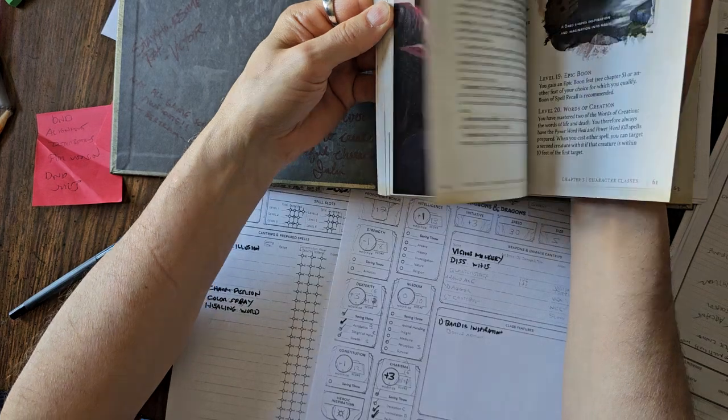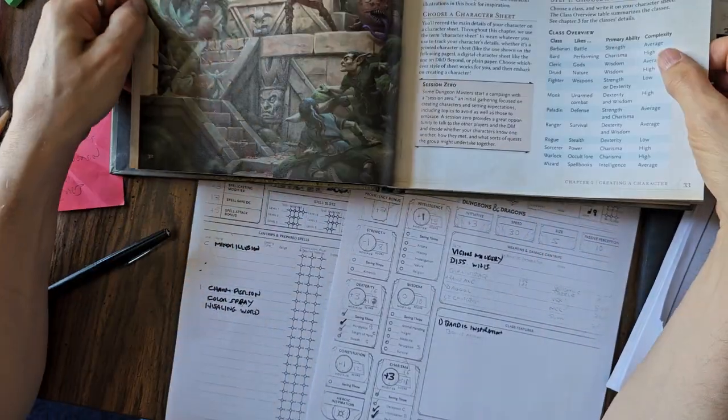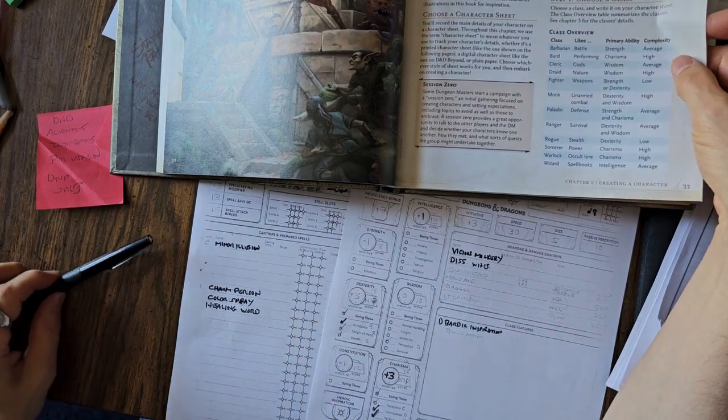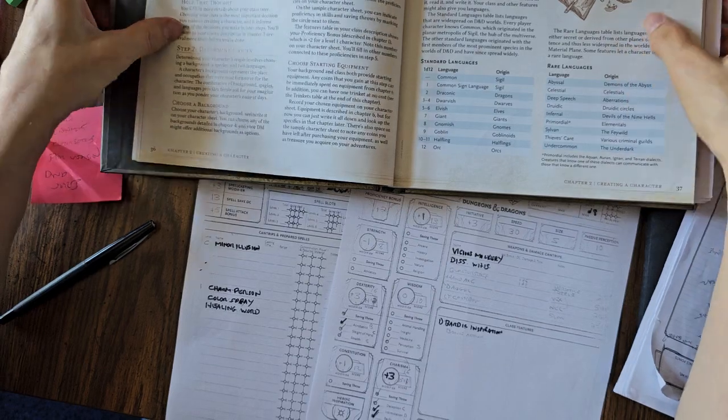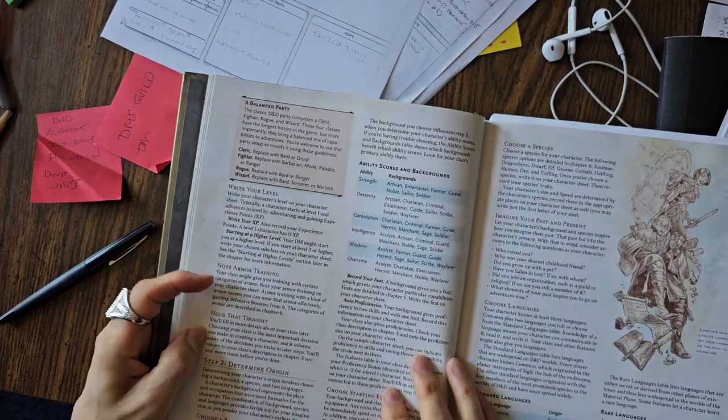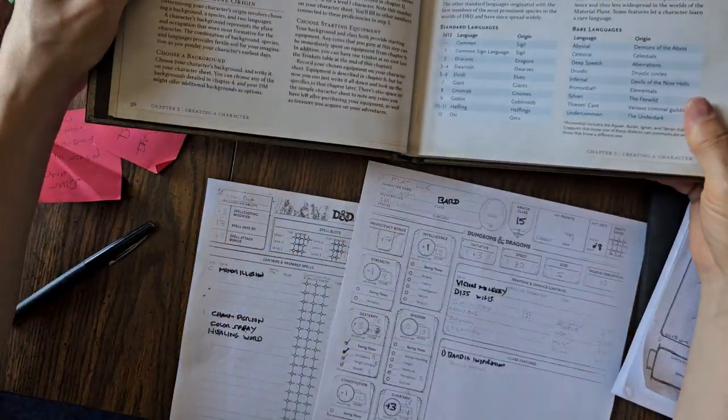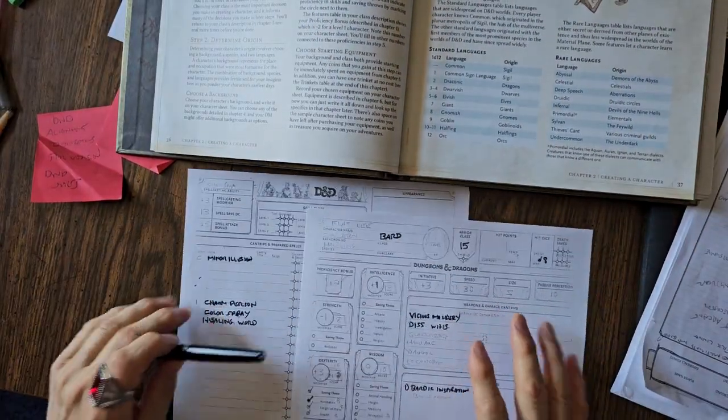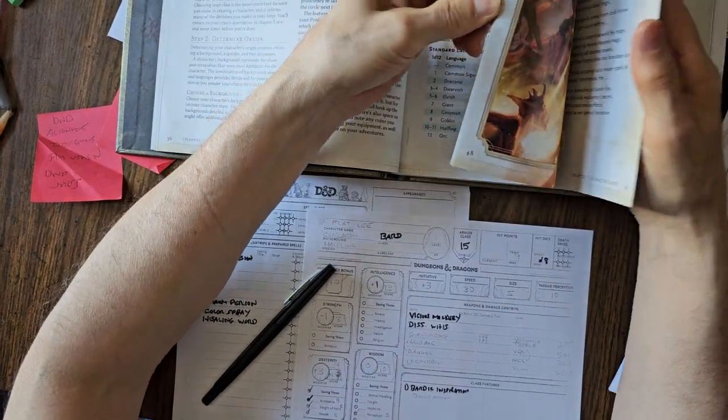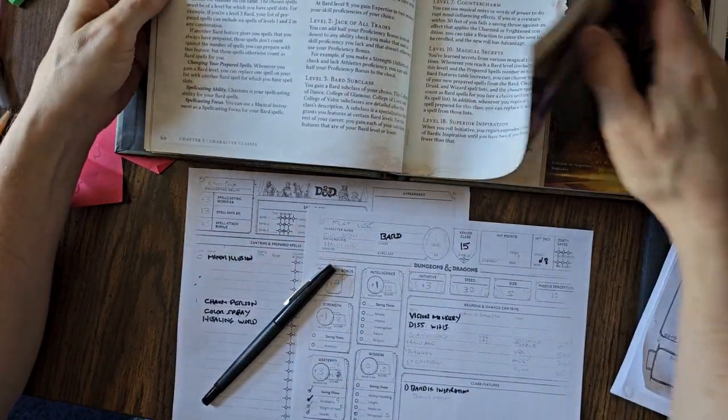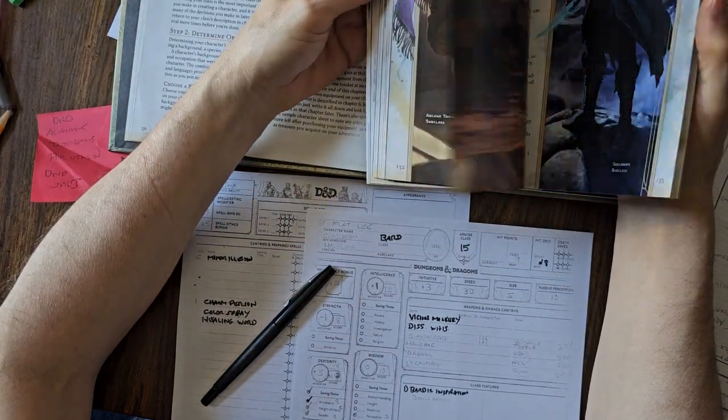So that's basically what I did for level one. If you keep going, the next thing you do is you pick your background and your origin. You pick your background and then you pick your species. So what I did was I picked a charlatan background for the bard. Let's go to charlatan for the backgrounds.